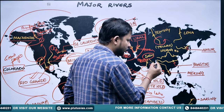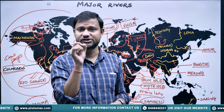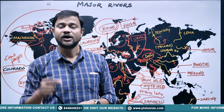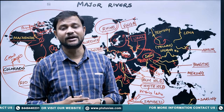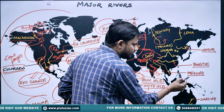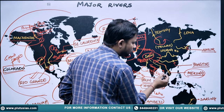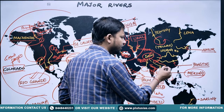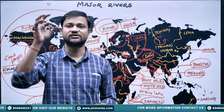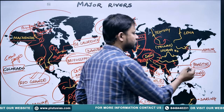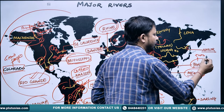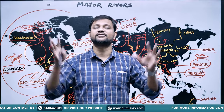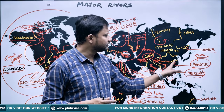The Tibetan Plateau is known as the 'Water Tower of Asia' because it gives rise to many rivers of the Asian continent. The Mekong River flows through four to five different states and drains into the South China Sea in the Pacific Ocean. Next is the Yangtze River, the longest river in Asia at approximately 5,000 kilometers — notably the longest river flowing through a single country, China. It originates in the Tibetan part and drains into the East China Sea.